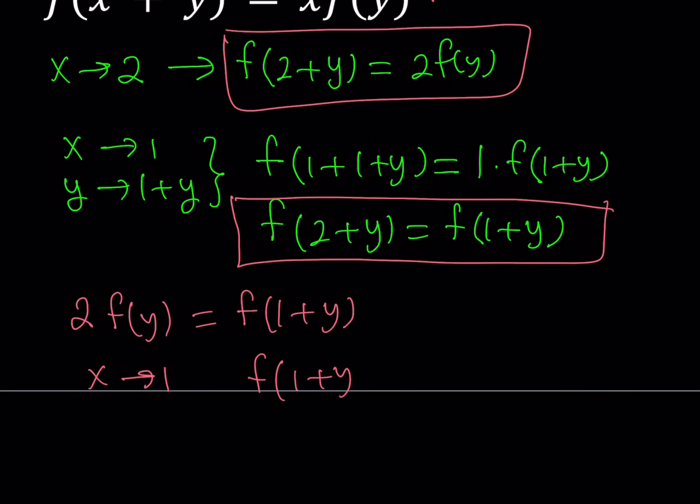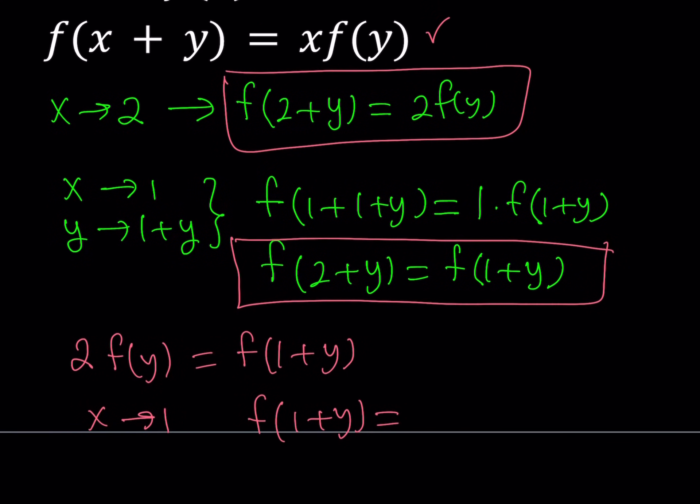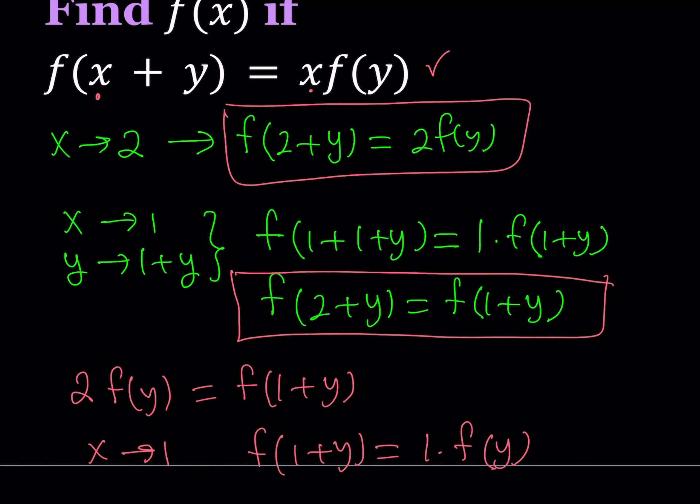f of 1 plus y equals 1 times f of y. Oops, I wrote f of 2. f of y, right? Just replace x with 1 here and here, and then leave the y unchanged. And that's what you get. Great. So, this gave us f of 1 plus y in a different way.